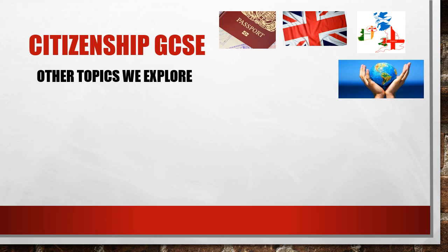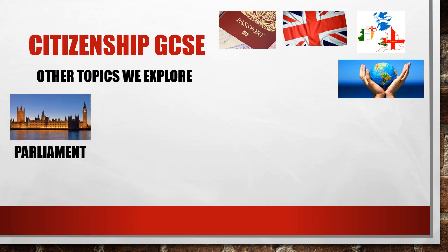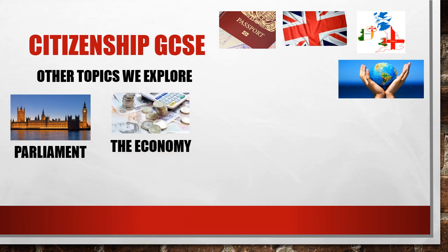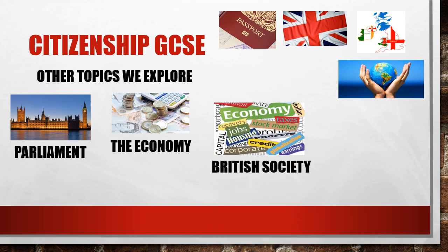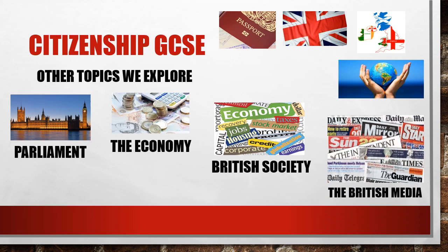Other topics we explore are quite varied. We look at the work of parliament and how parliament works — how bills are passed and how laws are made. We'll look at the economy and whether money is actually a real thing, how the economy functions, and its relationship to politics. We'll also look at British society broadly, covering jobs, housing, the effects of globalisation, and how corporations and earnings are affected by decisions made by parliament and the economy. Finally, we'll look at the British media and the role of the press within a democracy.